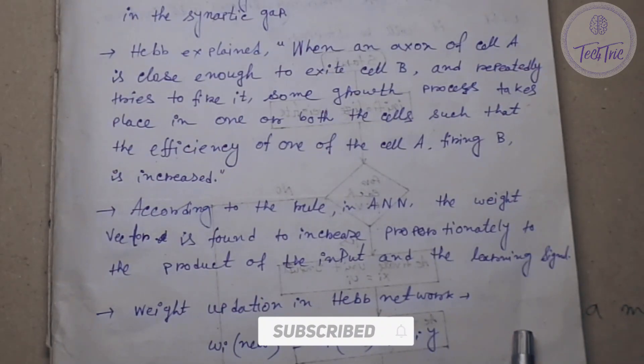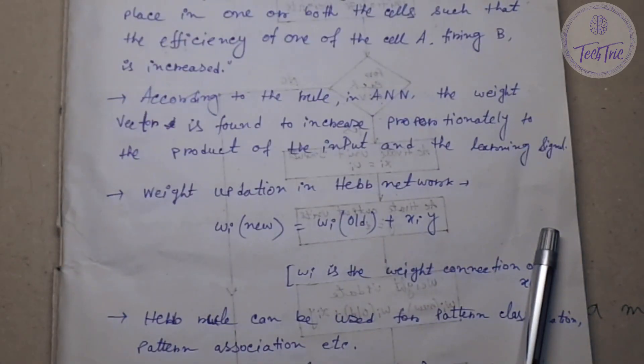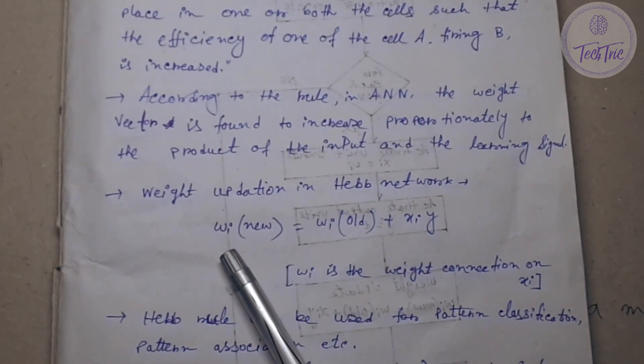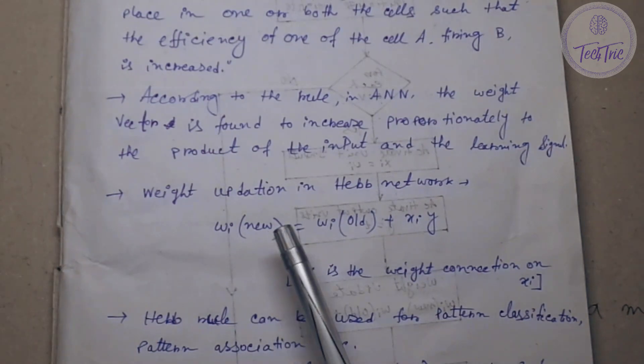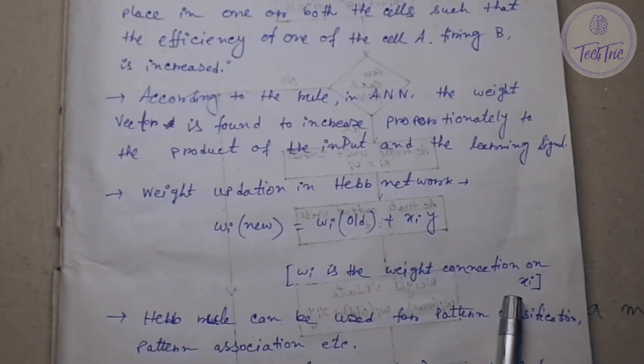According to the rule in artificial neural network, the weight vector is found to increase proportionately to the product of the input and the learning signal. How to update the weight in Hebb network? W_i(new) equals W_i(old) plus X_i times Y. Here W_i is a weight connection on X_i, X_i is input and Y is the output.